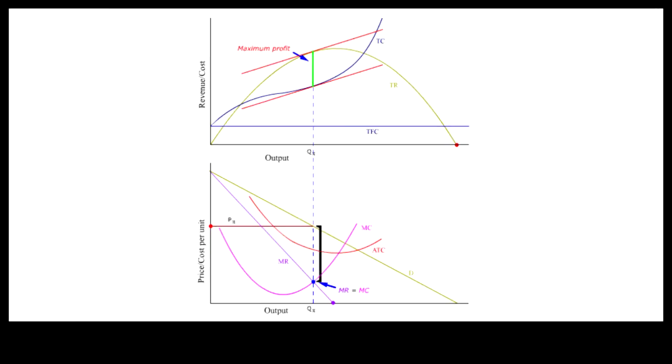Because price is always greater than marginal revenue under single pricing with a downward sloping demand curve, and MR equal to MC is the condition for profit maximization, therefore, price is always greater than MC when profit is maximized.